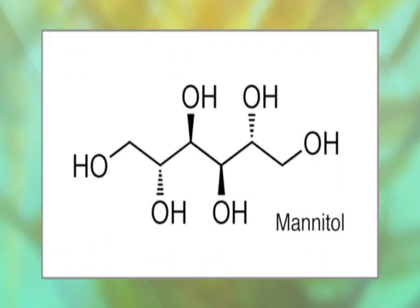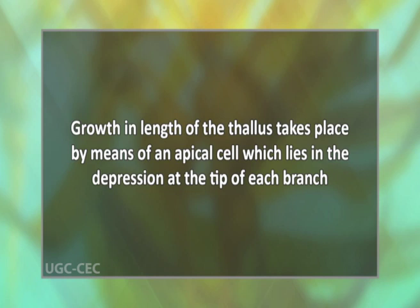The organelles of the cortical cells are arranged just the reverse of the epidermal cells, having an outer layer of chloroplasts. The chloroplasts of the medullary and hyphal cells are much reduced. Mannitol is the form of photosynthate translocated, with the mannitol translocated to the growing apex from the blades of the alga. Rudimentary sieve plates are present in Fucus. Growth in length of the thallus takes place by means of an apical cell which lies in the depression at the tip of each branch. The apical cell divides several times a year, resulting in the formation of a dichotomy, with one arm being longer than the other.